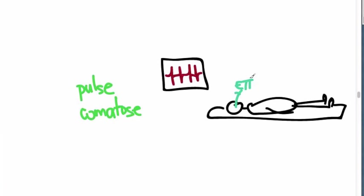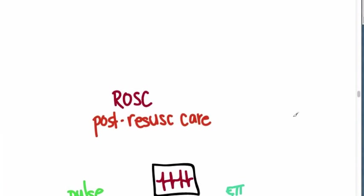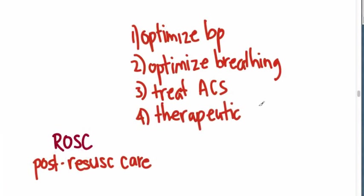So I'm going to assume he's intubated. So what we have here is a return of spontaneous circulation and the new ACLS guidelines really want to stress post-resuscitative care. Now there are several goals we're going to want to do in post-resuscitative care and they are to optimize blood pressure, optimize breathing, treat any underlying ACS and therapeutic hypothermia.